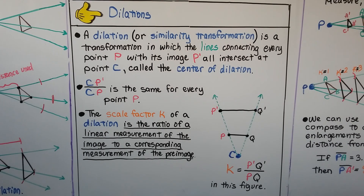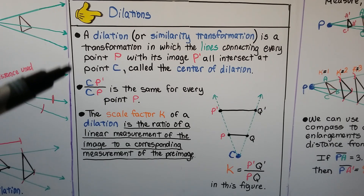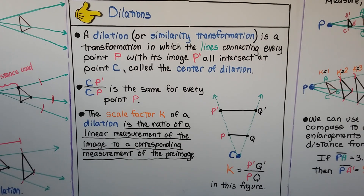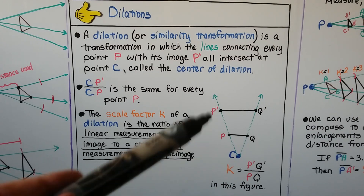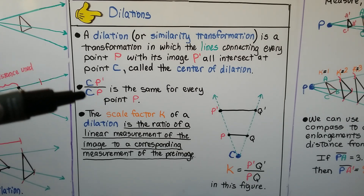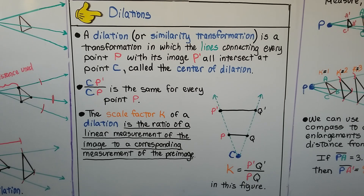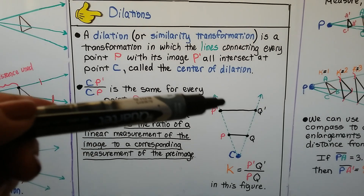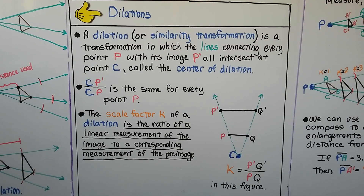A dilation, or similarity transformation, is a transformation in which the lines connecting every point P with its image P prime all intersect at point C, called the center of dilation. The quotient of CP prime and CP is the same for every point P. The scale factor k equals the quotient of P prime Q prime and PQ — the ratio of a linear measurement of the image to a corresponding measurement of the pre-image.